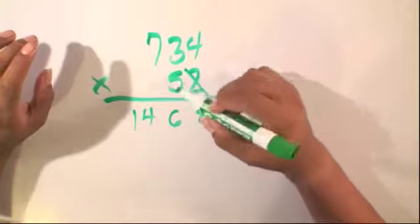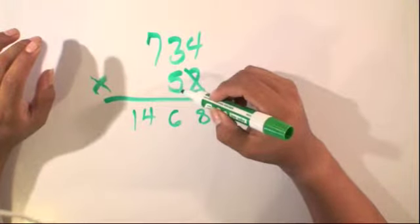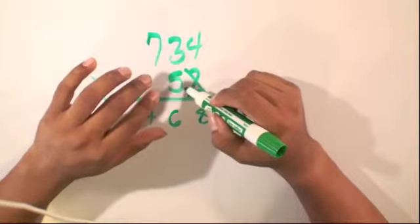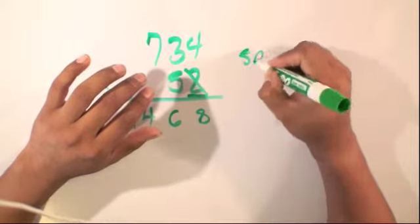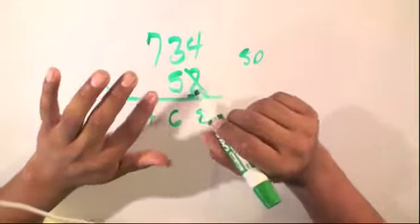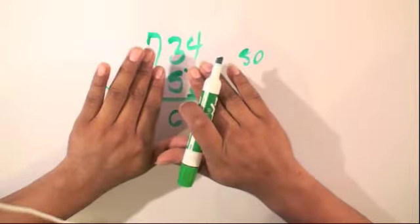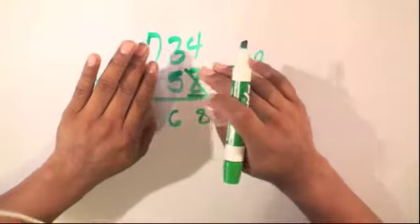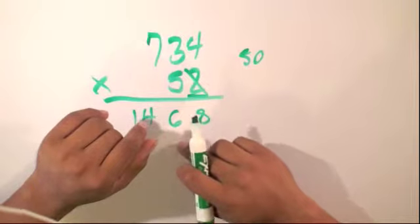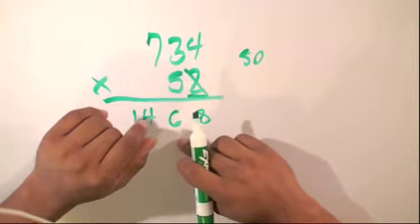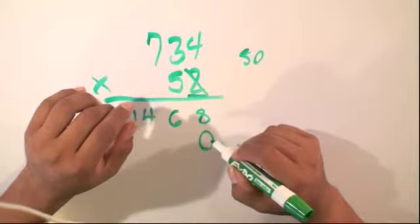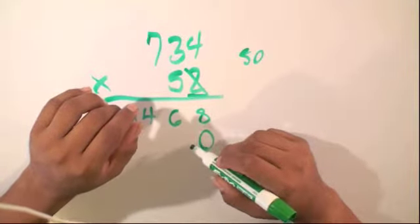So we're done with 2. Now, we're going to look at the 5. But if you look this at another way, the 5 is actually a 50. So, since this is in the tens place, we're actually going to have to start putting our answers in the tens spot down here. So, we can actually put a 0 here to help you remember where to start.